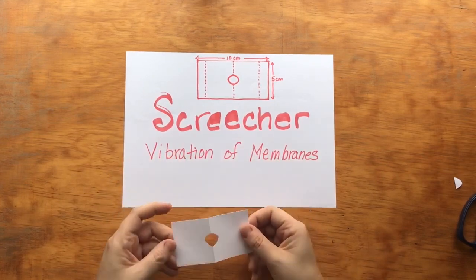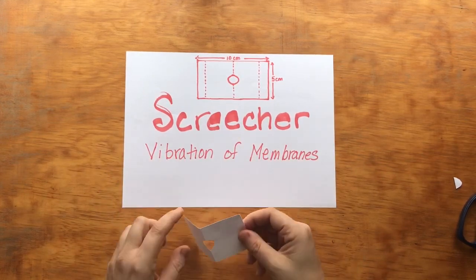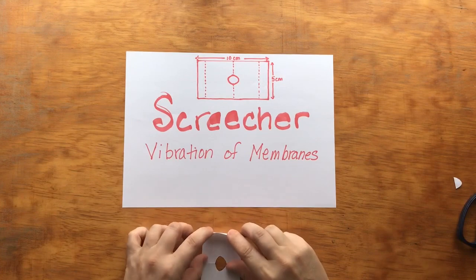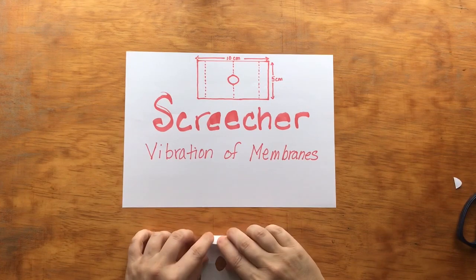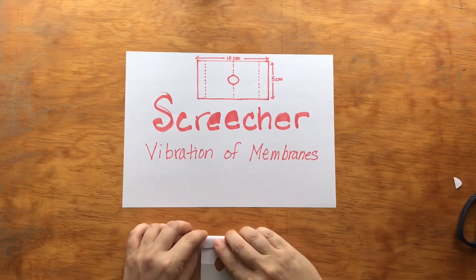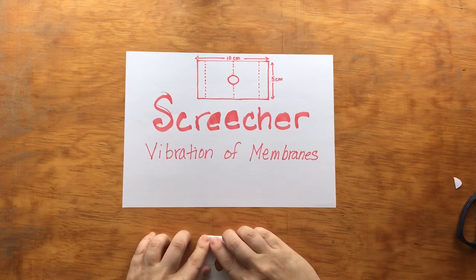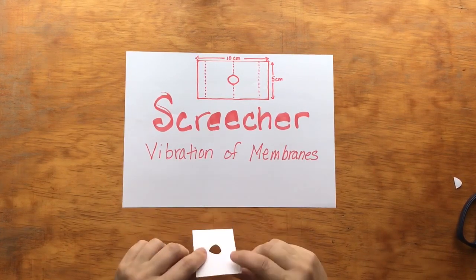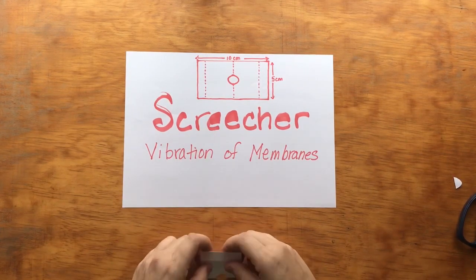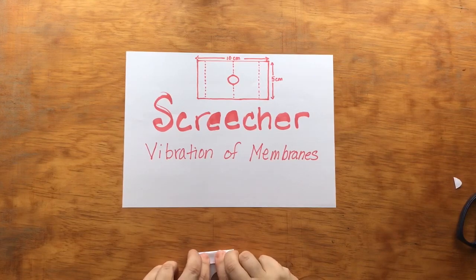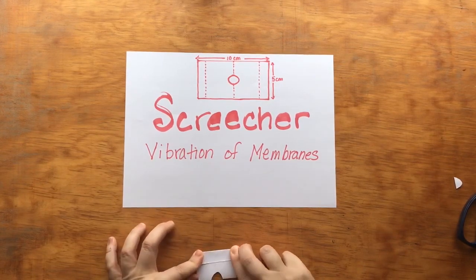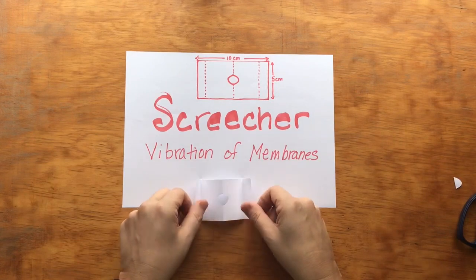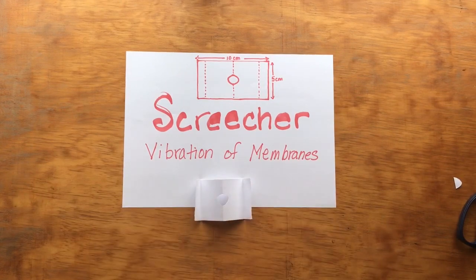Once they've done that, they open it up, and then you're going to fold forward the two edges — very simply like that — and then you have built the screecher.